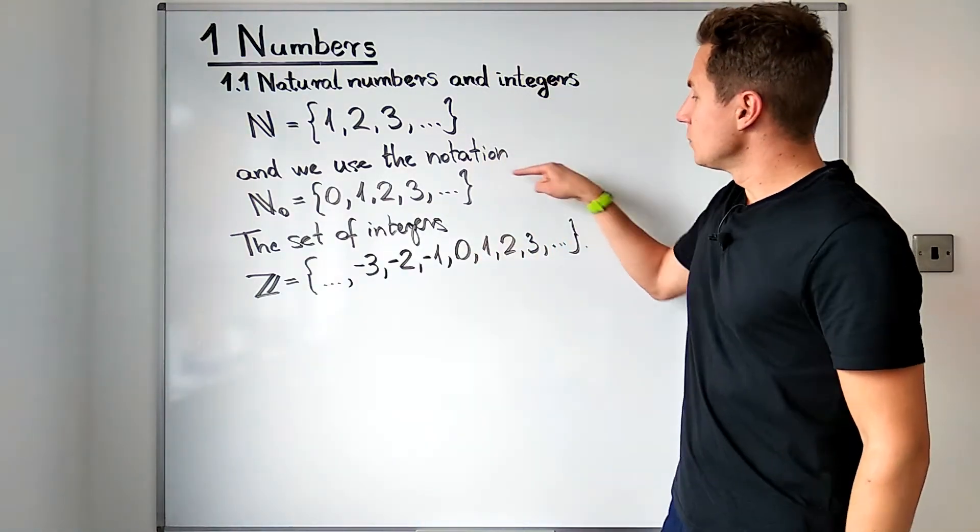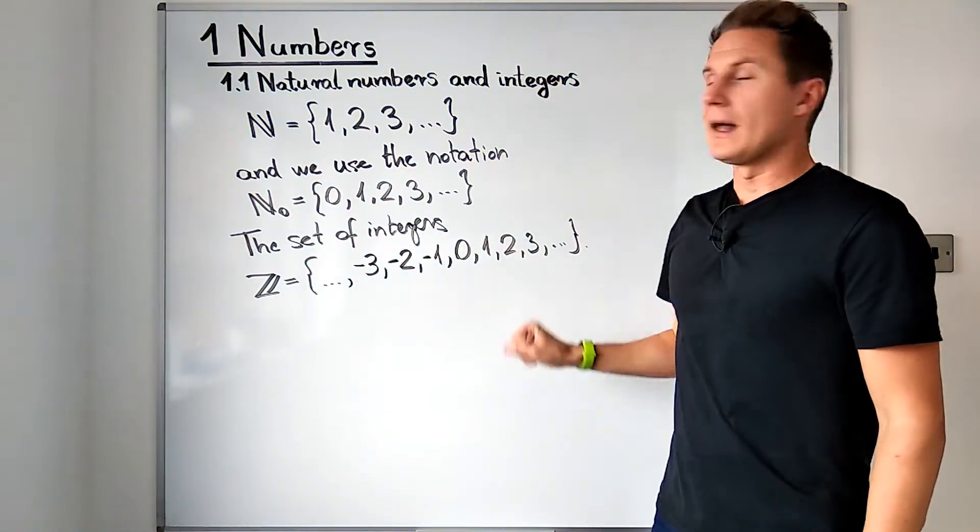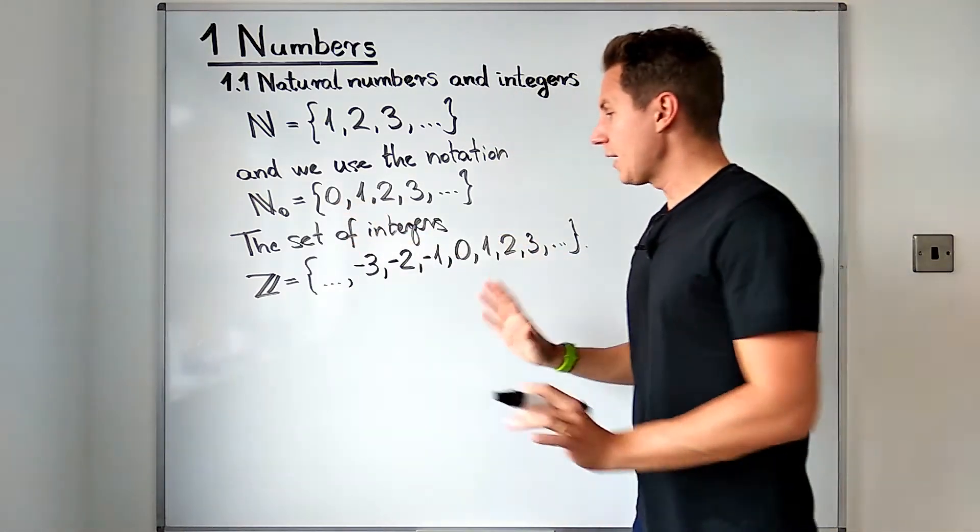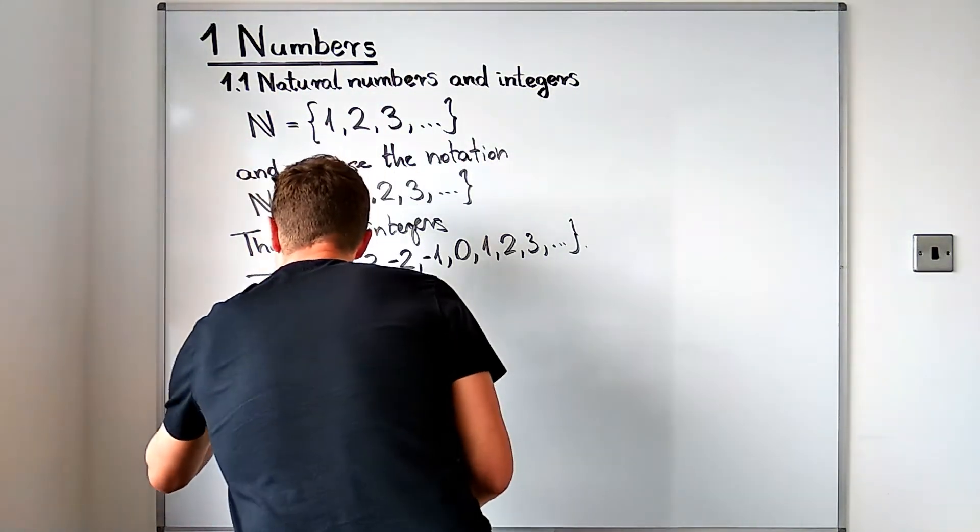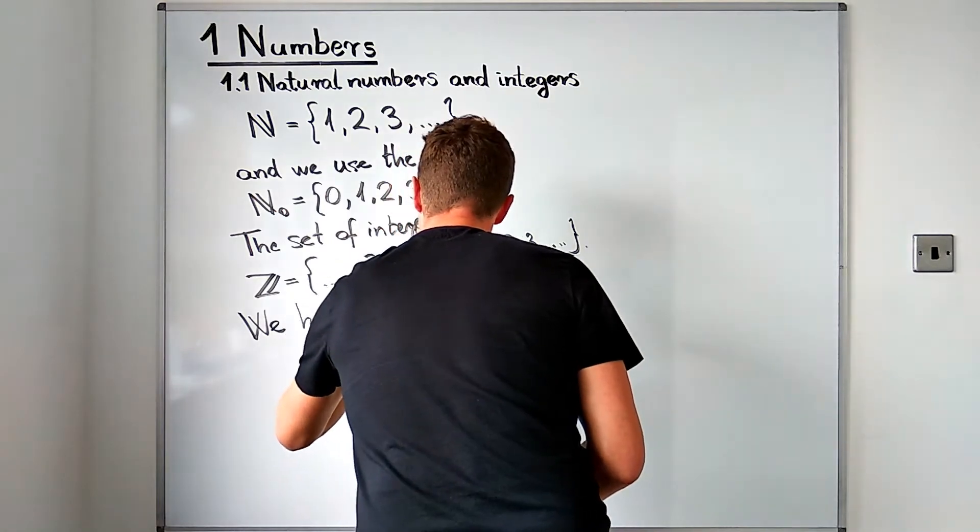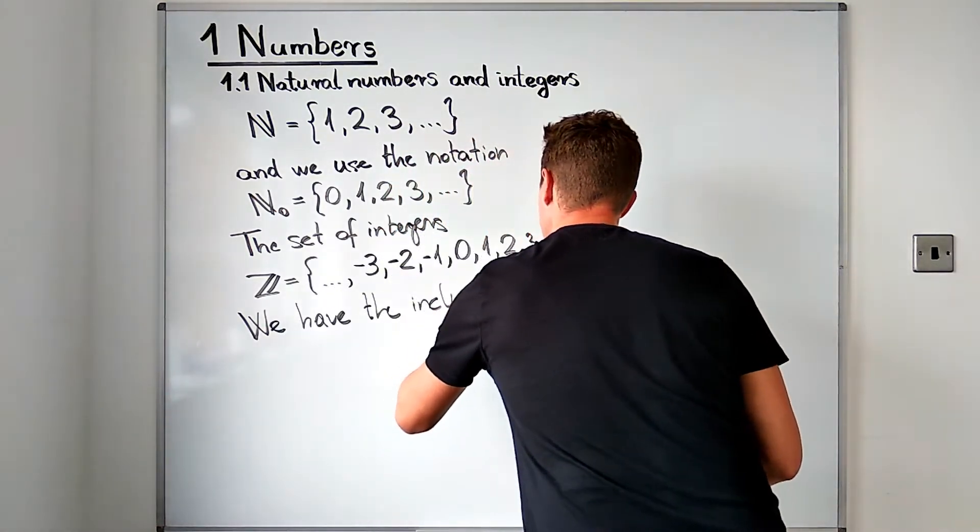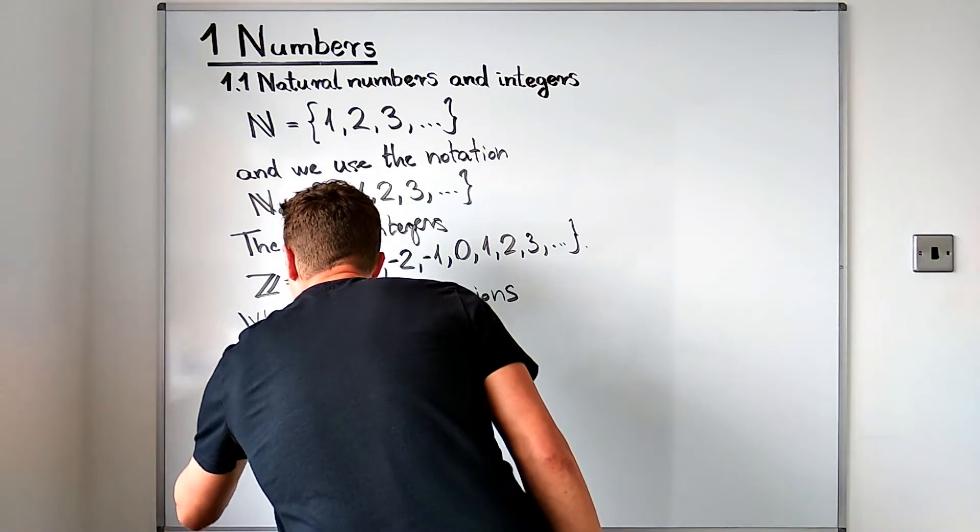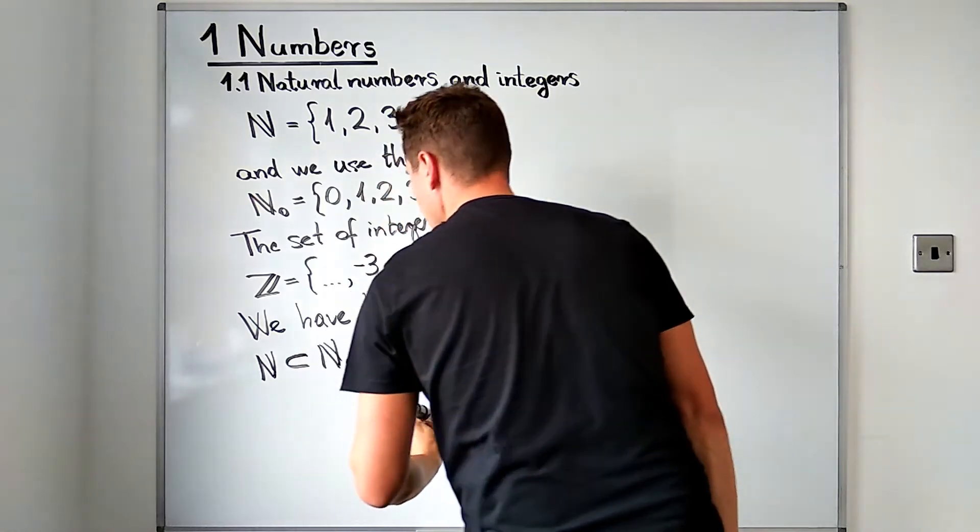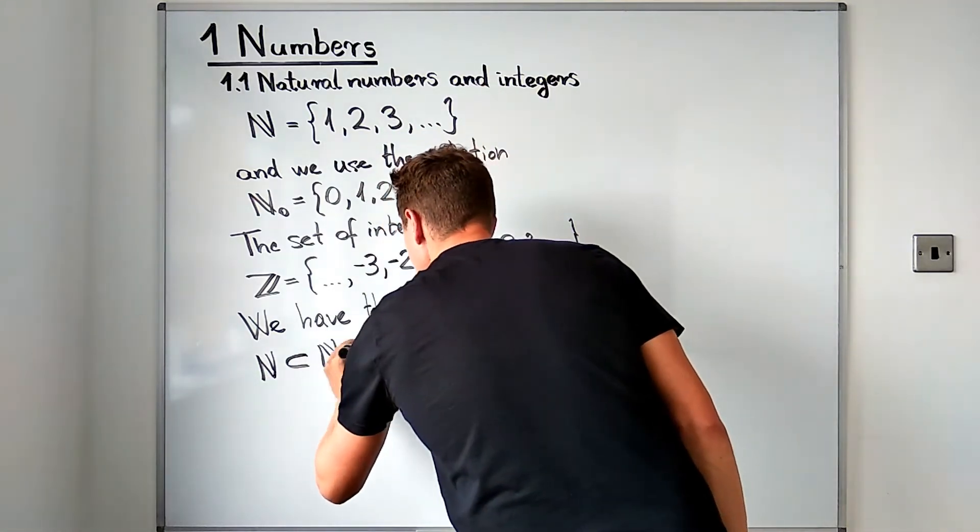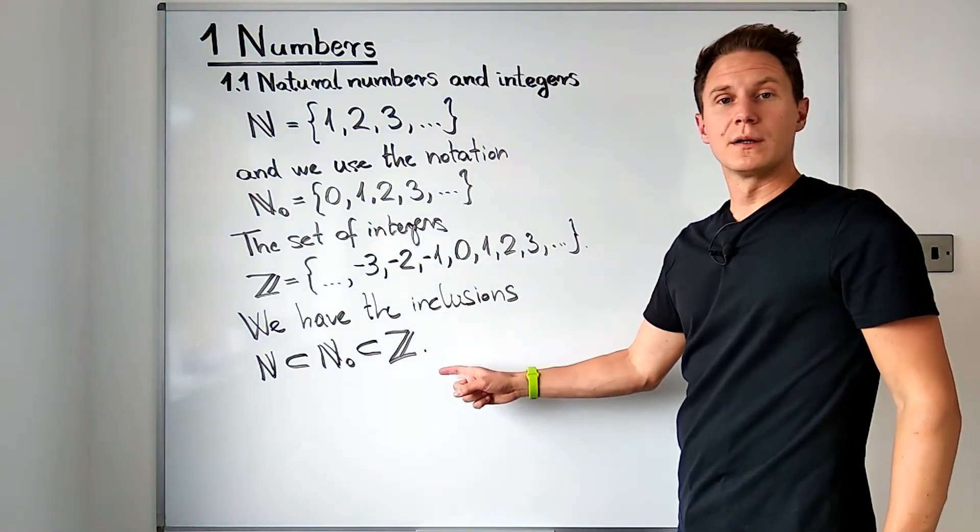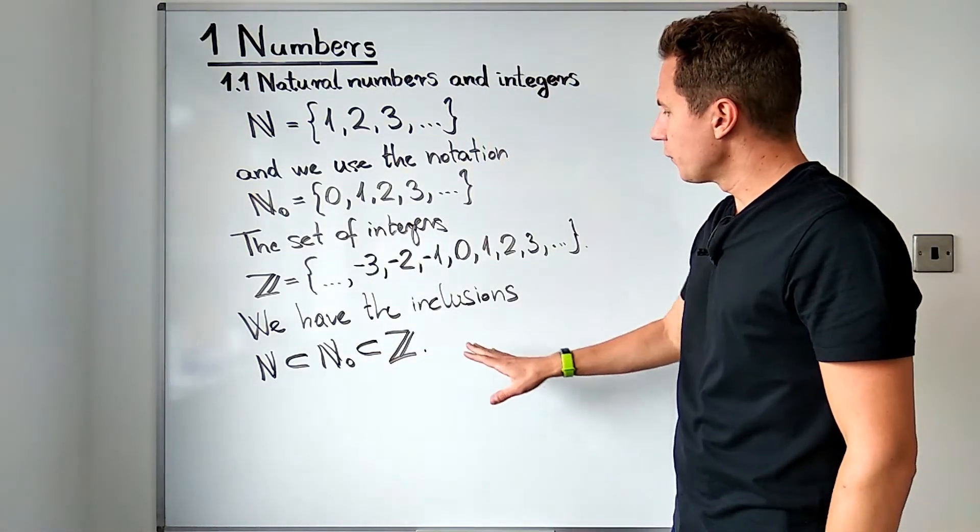All three sets that you see here are infinite and since every natural number is an integer and 0 is also an integer, we have the following inclusions between these sets. So the set of natural numbers sits inside this set N sub 0, it's a subset of N sub 0 which is a subset of the set of integers.